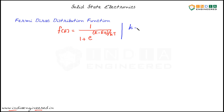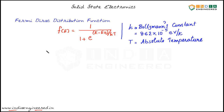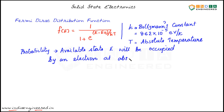Here, k is the Boltzmann constant. We will be using the unit electron volt per Kelvin. Always remember that instead of Joule per Kelvin, we will use k in electron volt per Kelvin because for energies we will preferably use electron volts. So always remember that if you are substituting energies in electron volts, use Boltzmann constant value in electron volt per Kelvin, and its value is 8.62 × 10⁻⁵ eV/K. T is the absolute temperature. The Fermi-Dirac distribution gives the probability that an available state E will be occupied by an electron at absolute temperature T.